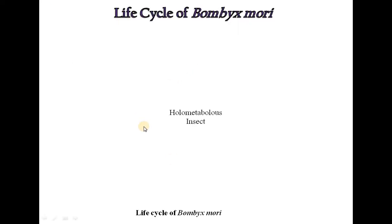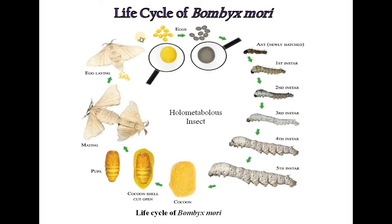The terminal abdominal segments of the male have a pair of hooks known as harpae, which serve as an accessory copulatory organ. Bombyx mori shows holometabolous kind of life cycle, meaning all four life stages — eggs, larvae, pupa and adult — are present, and that is why it is called a holometabolous insect.